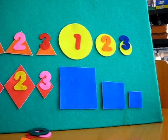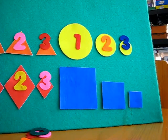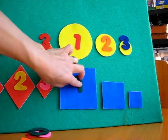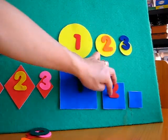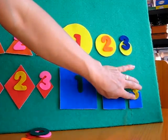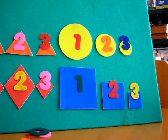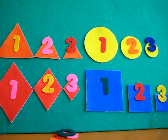Last, let's count our squares. Remember our blue squares that we talked about? We have one square, two squares, and three squares. Wow, look at that. That was so much fun learning our colors and shapes. Bye, friends.